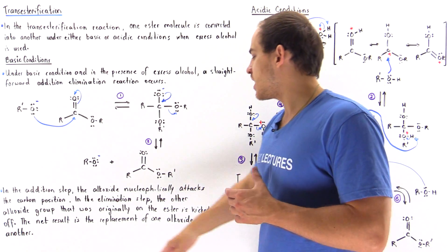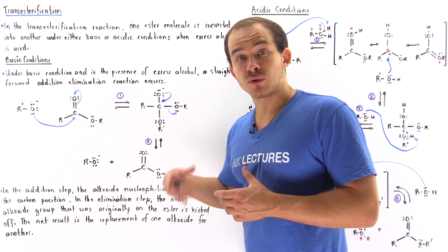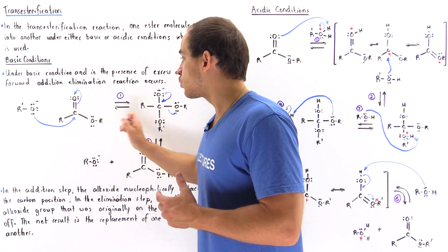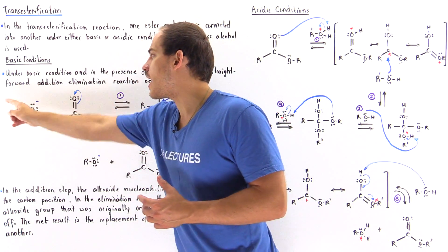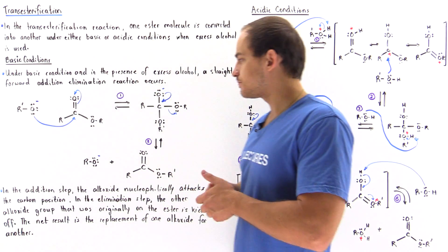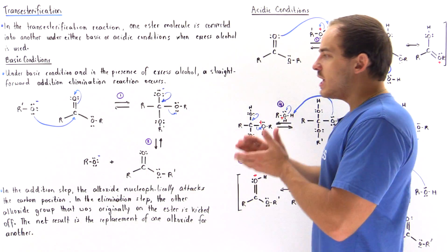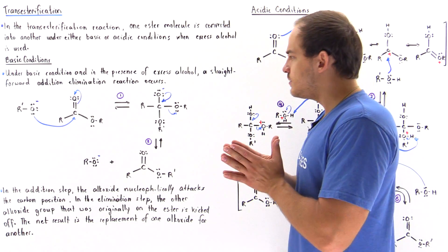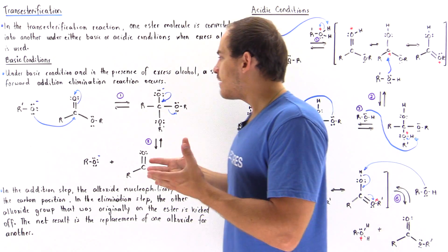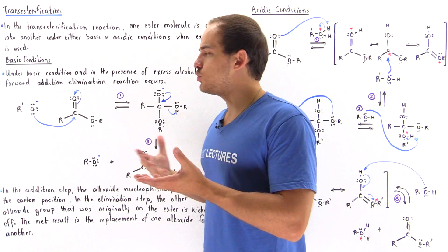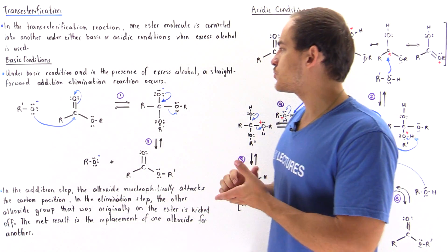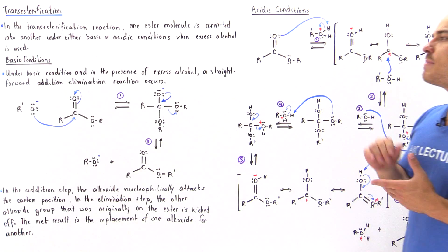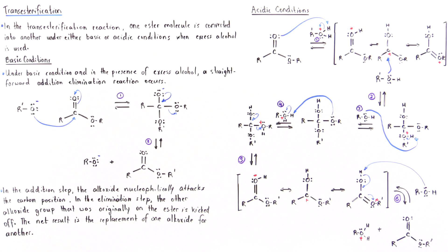The net result is we replace this OR group with this OR prime group. We see that under basic conditions, we have a simple two-step reaction mechanism. Now, what about acidic conditions?